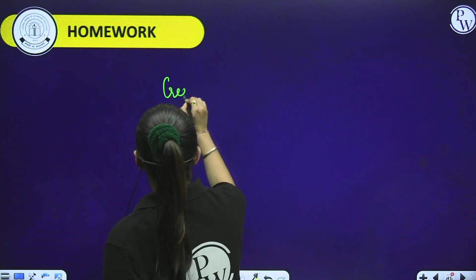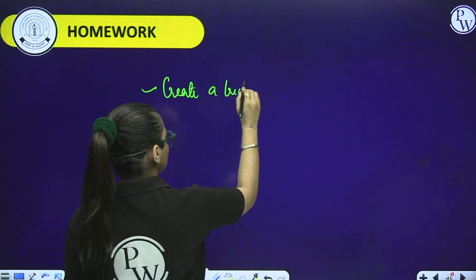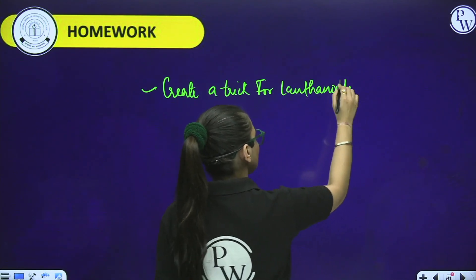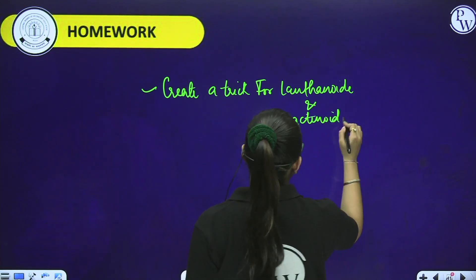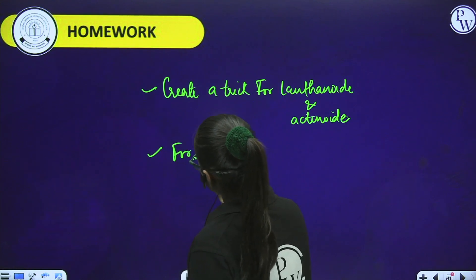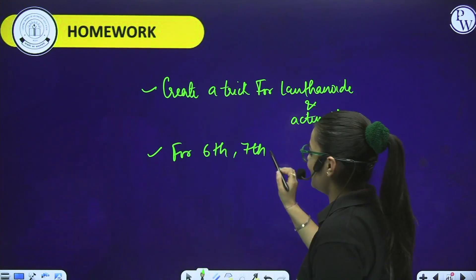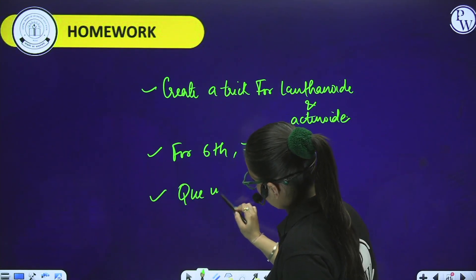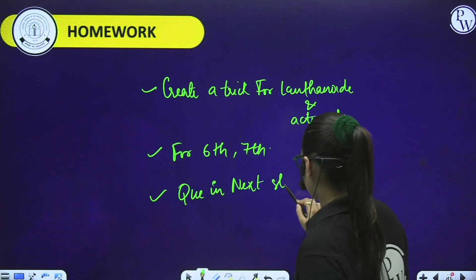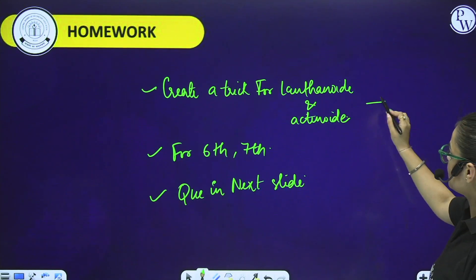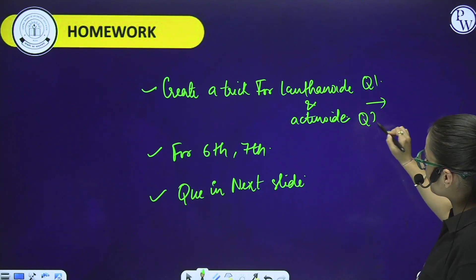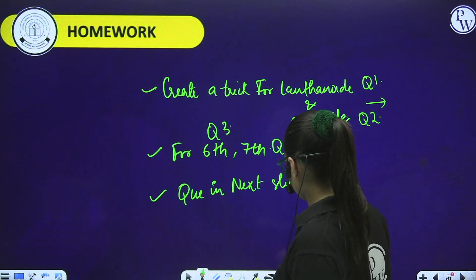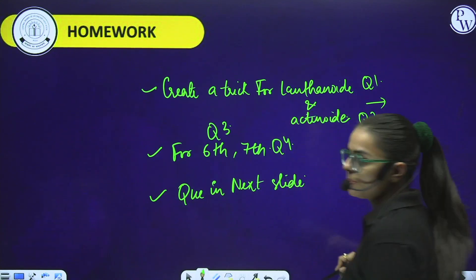Question 5: The period number in the long form of periodic table is equal to: A) Magnetic quantum number. B) Atomic number. C) Maximum principal quantum number of any element of that period. D) Maximum azimuthal quantum number. Answer: The period number is your shell number - that is, small n - meaning it relates to the principal quantum number. So Option C is correct: maximum principal quantum number of any element of that period.